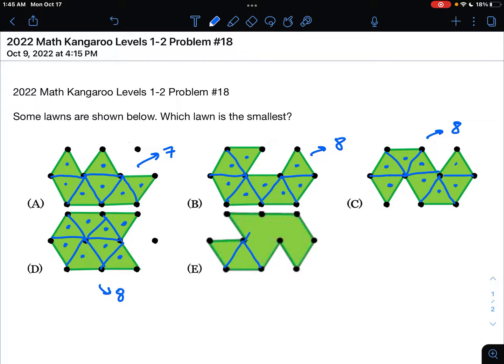And finally, for answer choice E. We have 1, 2, 3, 4, 5, 6, 7, 8.